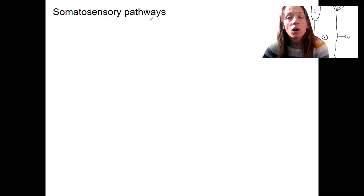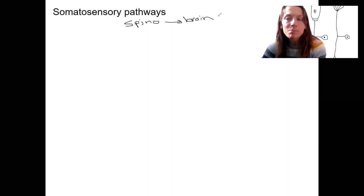What does this mean? Well, all the somatosensory pathways are going to have the word spino first. This means going from the periphery up to the brain, spinal brain. Spinothalamic is one example.